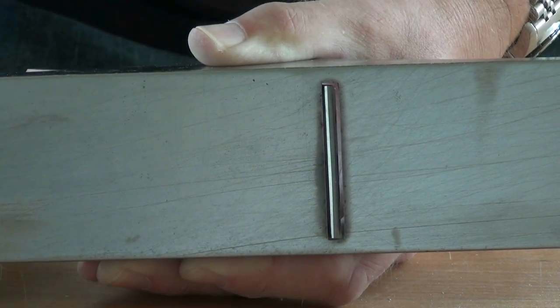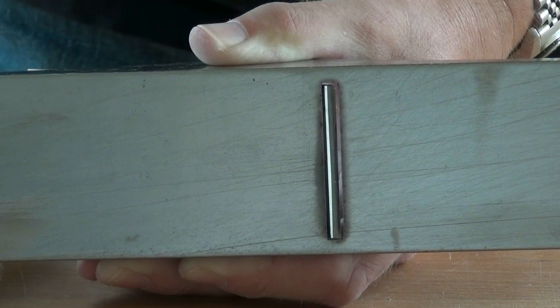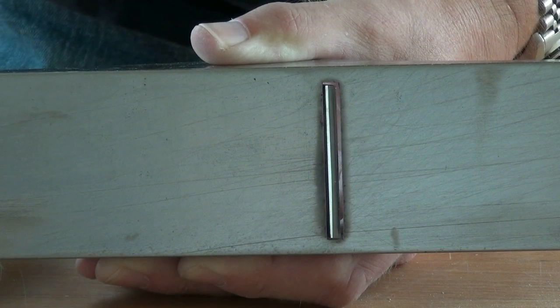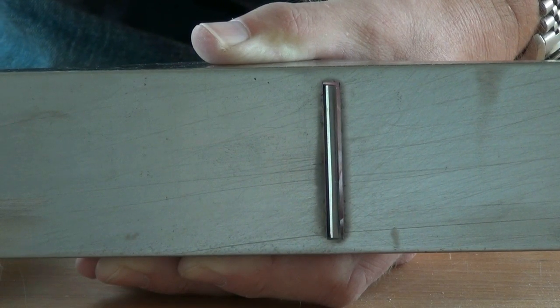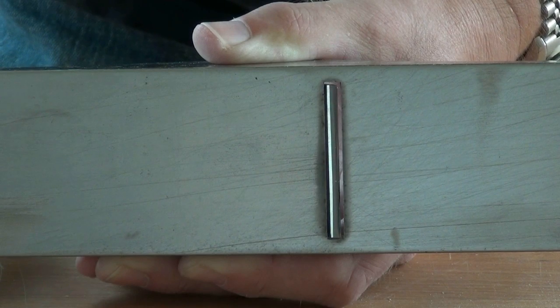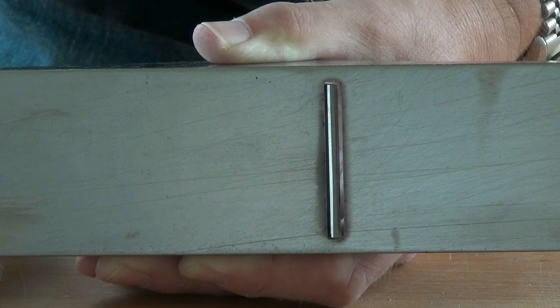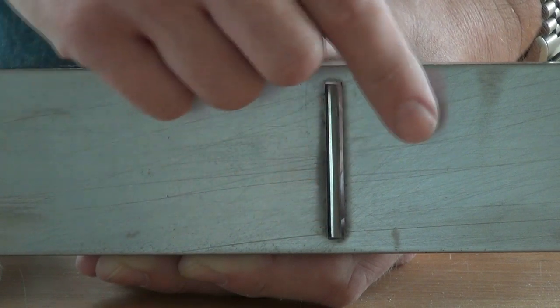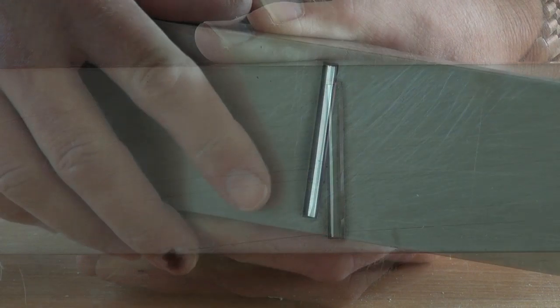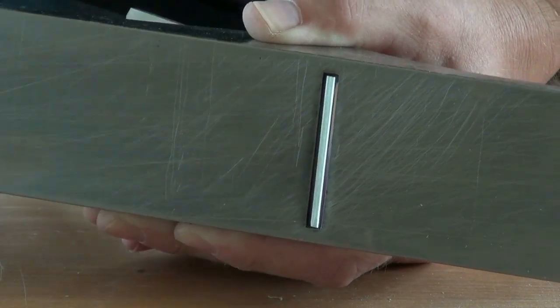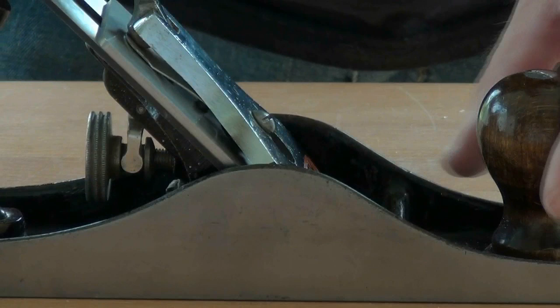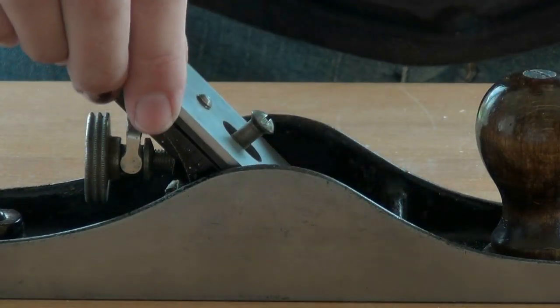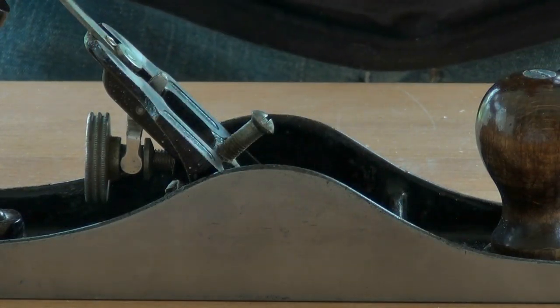If we wanted to take reasonably thick shavings, then we want the mouth opened up. If we're trying to support highly figured wood and to reduce tear out, then we'll want to reduce the thickness of shaving we're taking and reduce the gap between the front of the blade and the front of the mouth. Once we've achieved the gap that we want for the work we're going to do, we remove the lever cap and the blade.